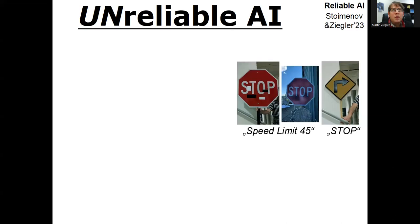For example, the left two stop signs, which we recognize immediately, are recognized by AI as a sign for speed limit 45, whereas the right sign is recognized as a stop sign, ironically.